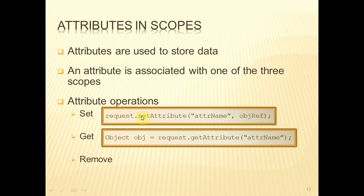If we now want to get this attribute that has been set, then we call request dot getAttribute, and pass in as the parameter a string with exactly the same name as was used for setting the attribute.